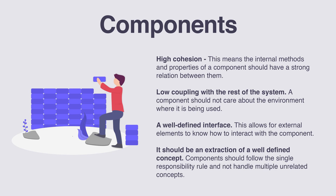If we follow the catalysis approach, there are some requirements for a component to be reused. First, high cohesion — this means the internal methods and properties of a component should have a strong relation between them. Then, low coupling with the rest of the system — a component should not care about the environment where it is being used. A well-defined interface allows external elements to know how to interact with a component. Finally, it should be an extraction of a well-defined concept — components should follow the single responsibility rule and not handle multiple unrelated concepts.